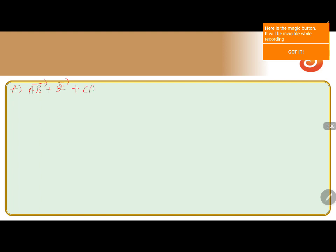Now let me take the first option: AB vector plus BC vector plus CA vector equals 0. AB vector can be written as OB vector minus OA vector, BC vector as OC vector minus OB vector, and CA vector as OA vector minus OC vector. OA, OB, and OC all cancel out, giving 0. So this option is true.